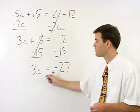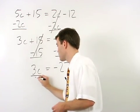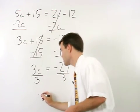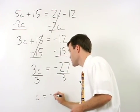To get c by itself, just divide both sides by 3, and c equals negative 9.